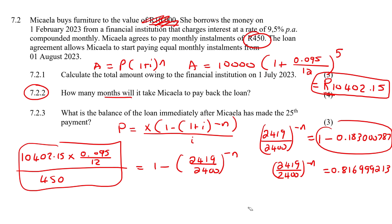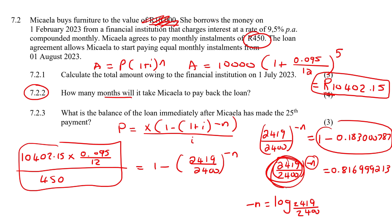With logs, you take your exponent and make it equal to the log of your base. Your base always stays your base — whether you're going from exponential to log or log to exponential, your base stays your base. So the base (2,419/2,400) stays in the base position, giving us negative N equals log base (2,419/2,400) of 0.816999213.